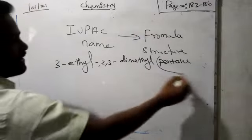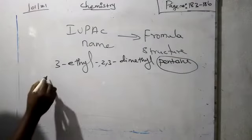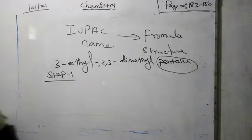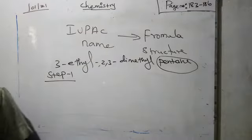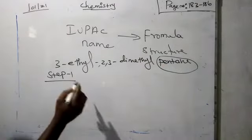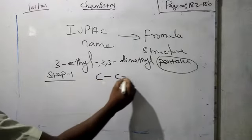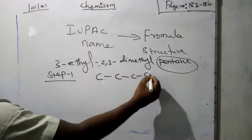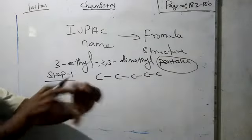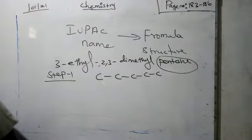Which one is the parent chain? We can work this out stepwise. Step 1: identify the parent chain and how many carbons are there. That should be written as a carbon skeleton. 'Pente' means 5, so 5 carbons should be there in the parent chain. We write 5 carbons continuously connected as a linear or straight-line structure.